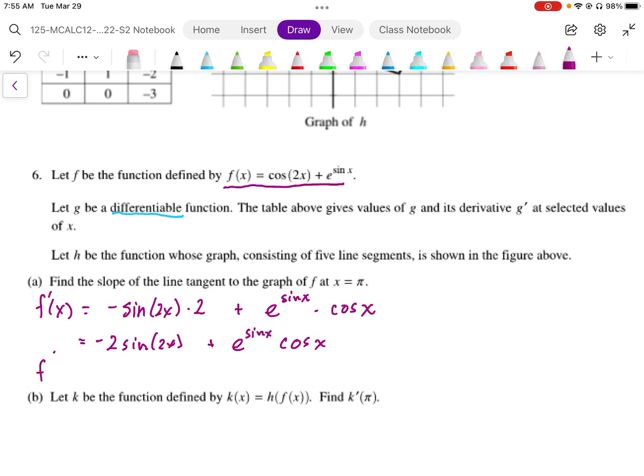And then we want to evaluate this at pi and that will give us the slope of that point. So we end up with negative 2 sine of 2 pi, which is 0, plus e to the sine pi times cos pi, which evaluates to e to the 0 times negative 1. So here we end up with 0 plus e to the 0 times negative 1. So the slope equals negative 1.